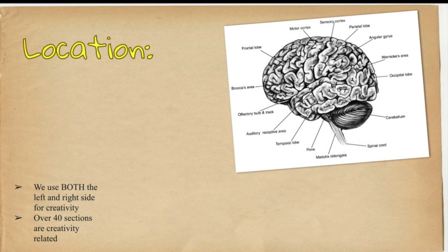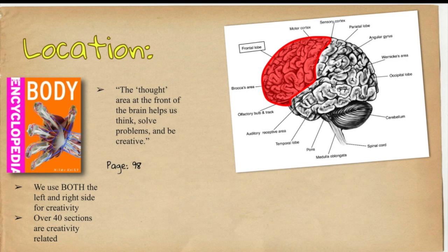Here's a helpful chart with labels that show which part of the brain is which and today we're going to be focusing on the frontal lobe, this highlighted area here. Now I happen to have this book in my house and I was scrolling through it and it said on page 98 that the area at the front of the brain helps us think, solve problems and be creative. That got my attention and the beginning of it said the thought area.